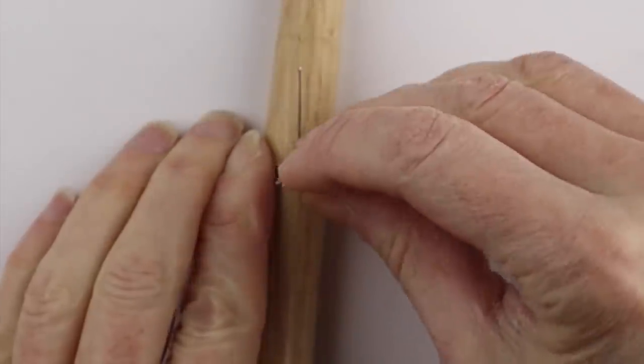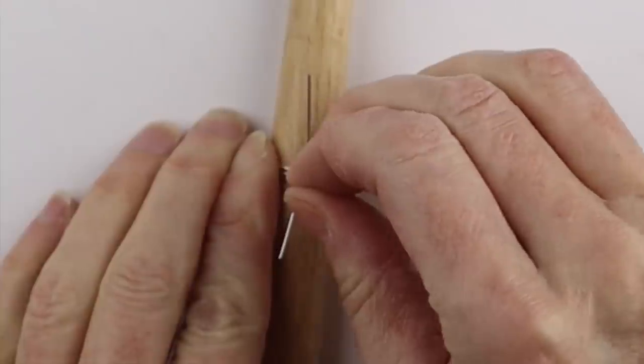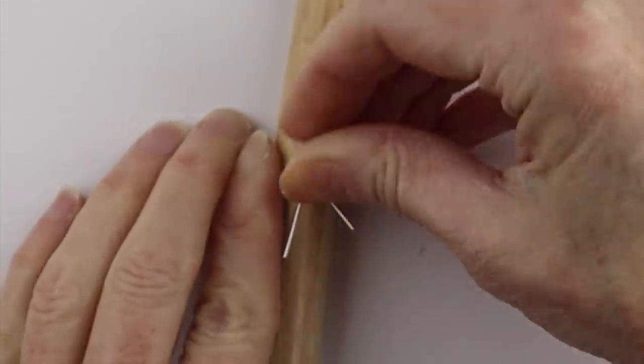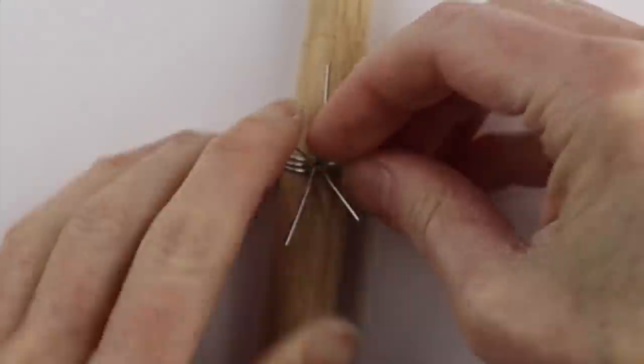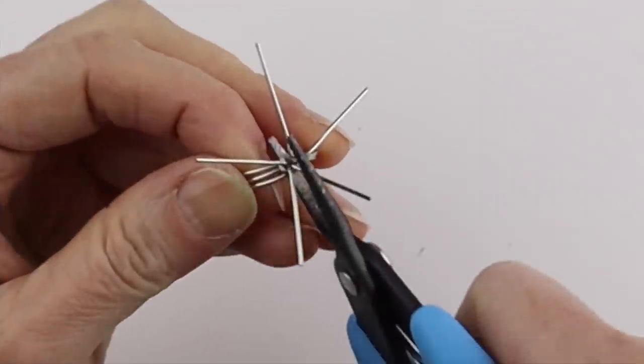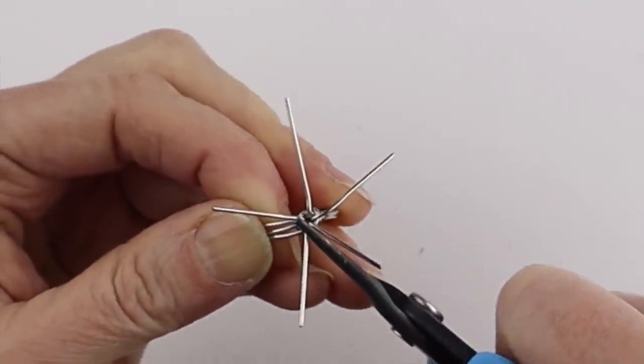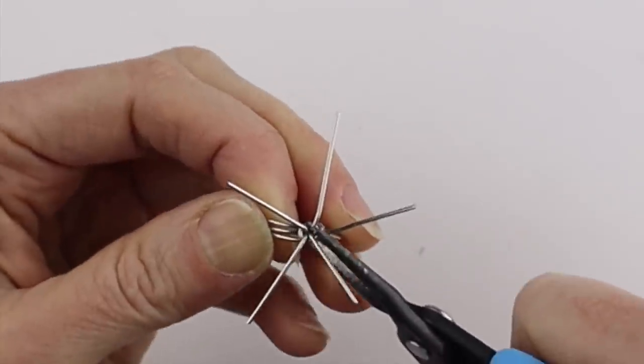That one out here, that one here, that one here, and that one here. So it looks a little bit like a star. And now we're going to push these ones down. So push these down so they're flat, go all the way around, rotate them, push, push, push.